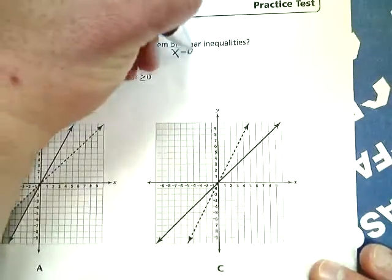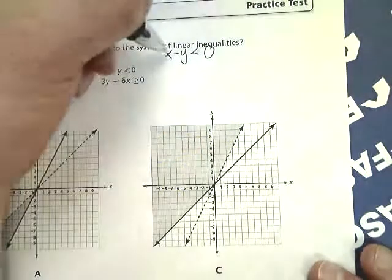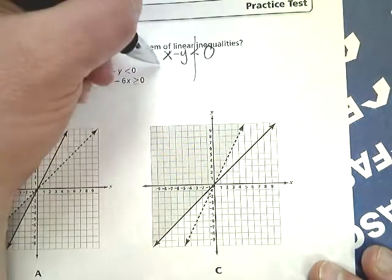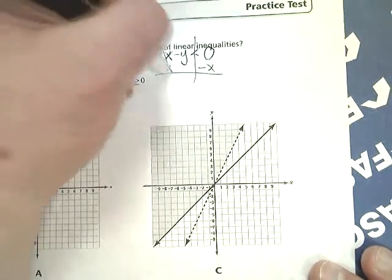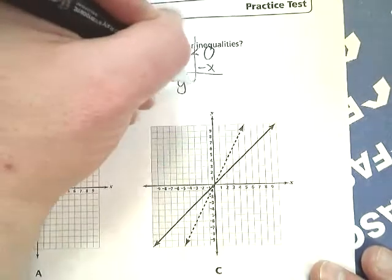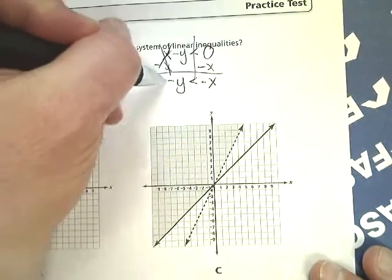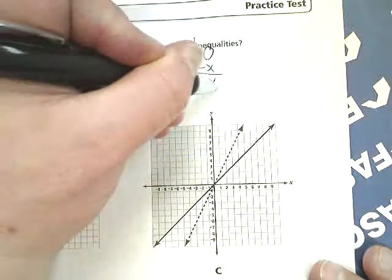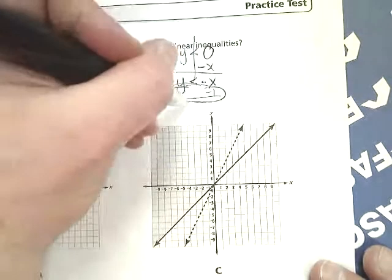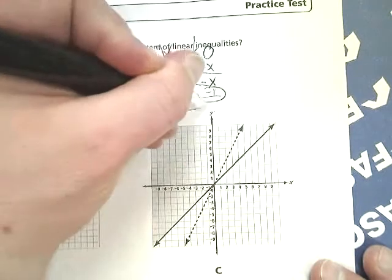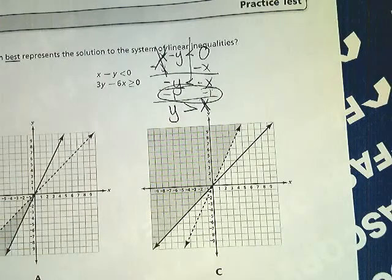So I'm going to take this x minus y is less than zero, and I'm going to move this x because I need to get y by itself. So I'm going to subtract x from both sides. Those cancel. I get negative y is less than negative x. And now this is kind of like times negative 1, so I'm going to divide by negative 1. When I divide by a negative in that last step, this needs to flip over. So y is greater than x, not greater than or equal to, greater than x.